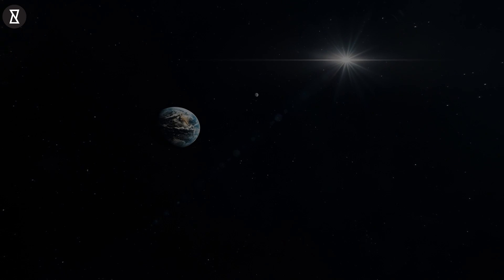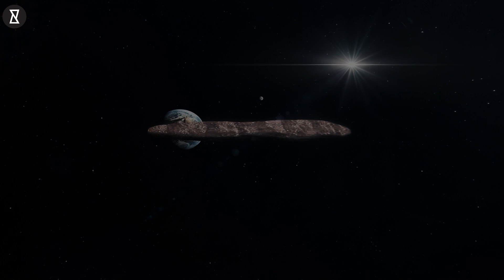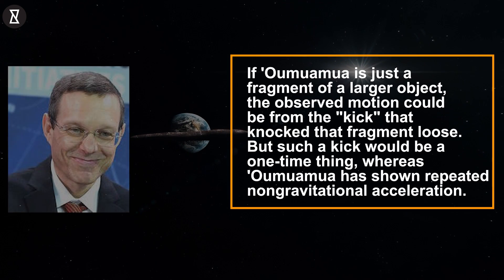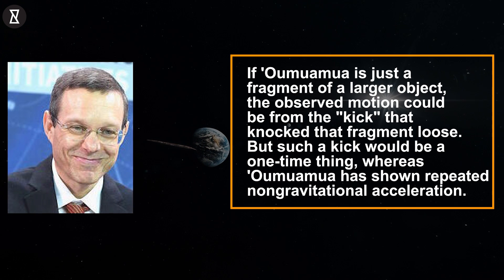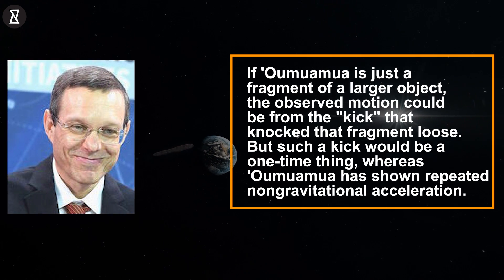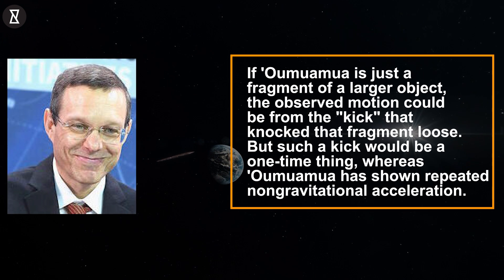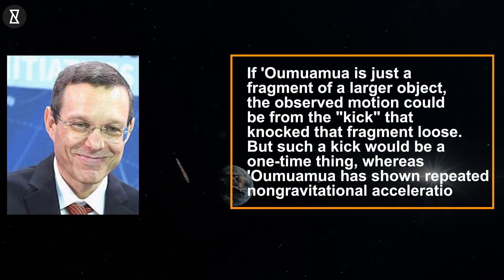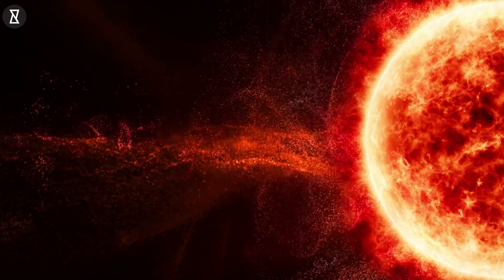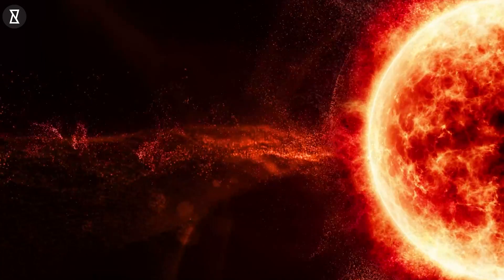There's another possible natural explanation, he added. If 'Oumuamua is just a fragment of a larger object, the observed motion could be from the kick that knocked that fragment loose. But such a kick would be a one-time thing, whereas 'Oumuamua has shown repeated non-gravitational acceleration, Loeb said. So, Bialy and Loeb came up with a new hypothesis.